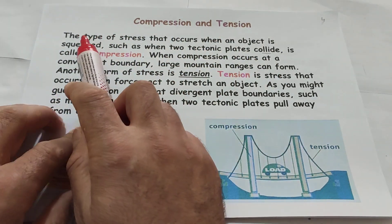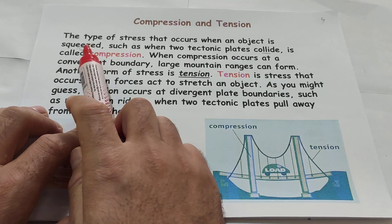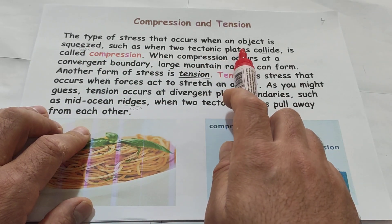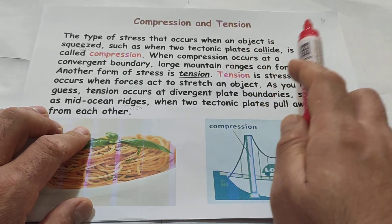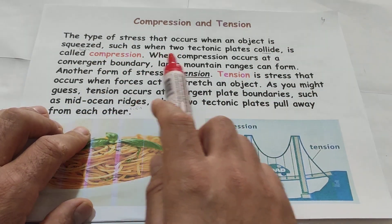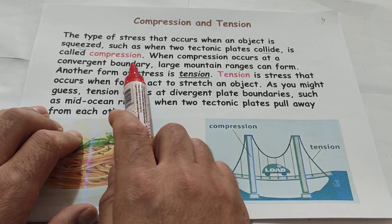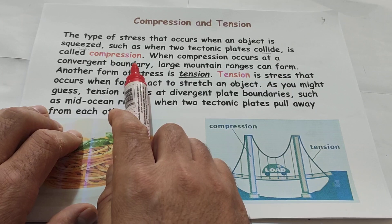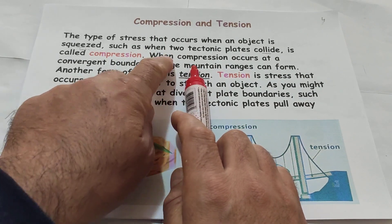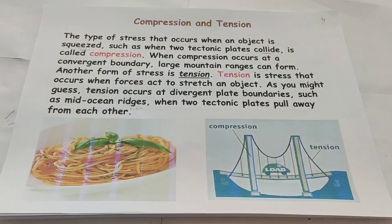Compression and tension. The type of stress that occurs when an object is squeezed, such as when two tectonic plates — that means lithosphere layers — collide, is called compression. When compression occurs at a convergent boundary — remember the three types of boundary — large mountains form. I have one example here, students, please look here.